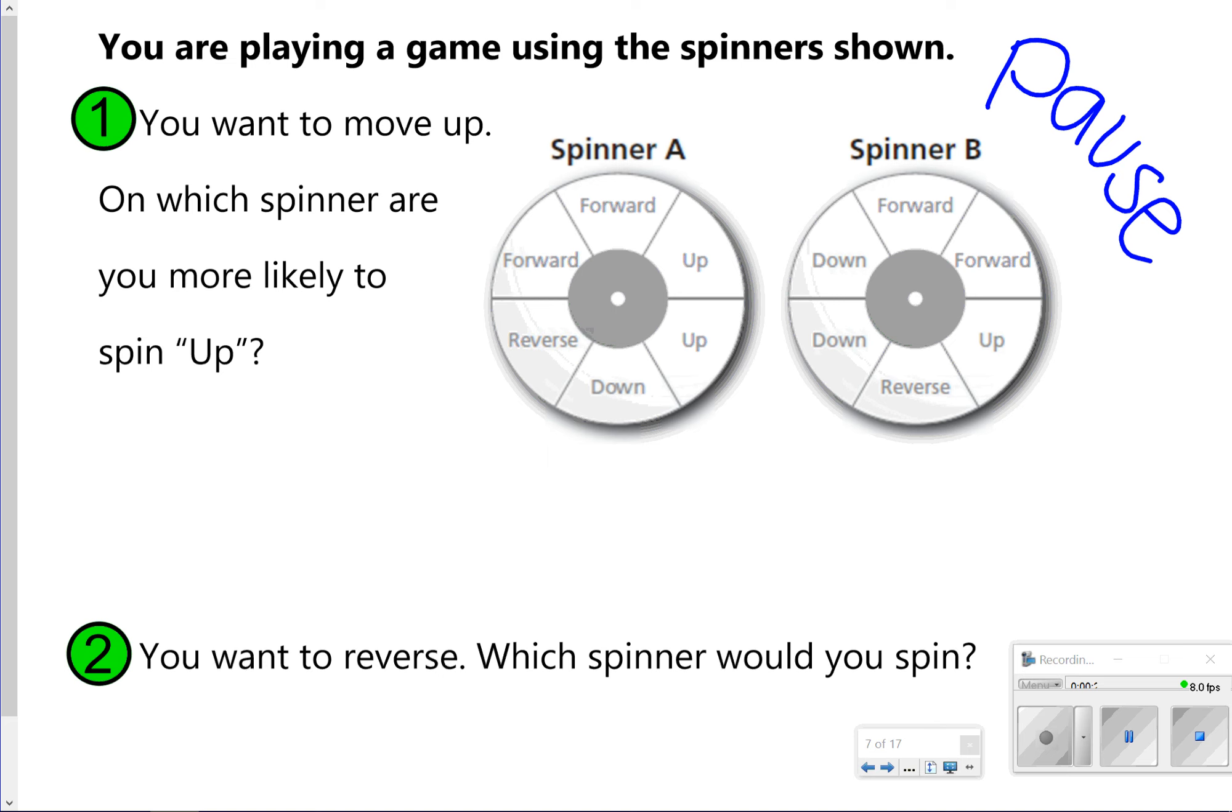Okay, so for number one it says which one are you more likely to spin up on and that's going to be spinner A because there's two opportunities to spin up.